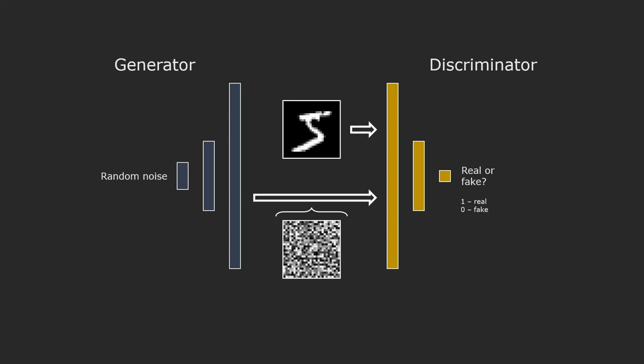The generator's goal is to trick the discriminator into thinking that an image the generator has generated gets evaluated as real by the discriminator. In other words, the generator tries to maximize the output of the discriminator for generated images.